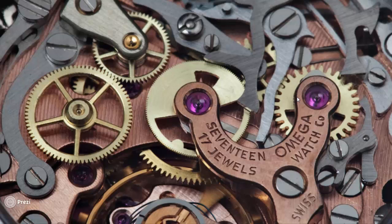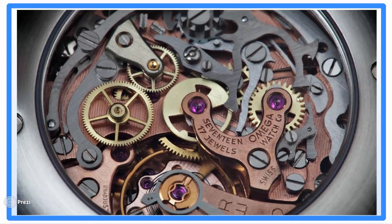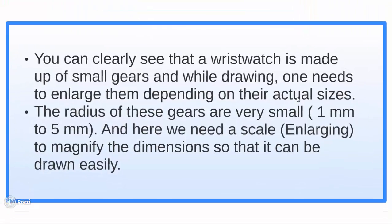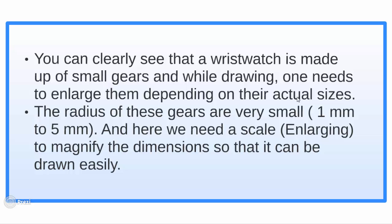In the second pic, you can clearly see that the wristwatch is made up of extremely small gears and while drawing, one needs to enlarge them depending on their actual sizes. The radius of these gears is very small ranging from say 1 mm to 5 mm. And here,